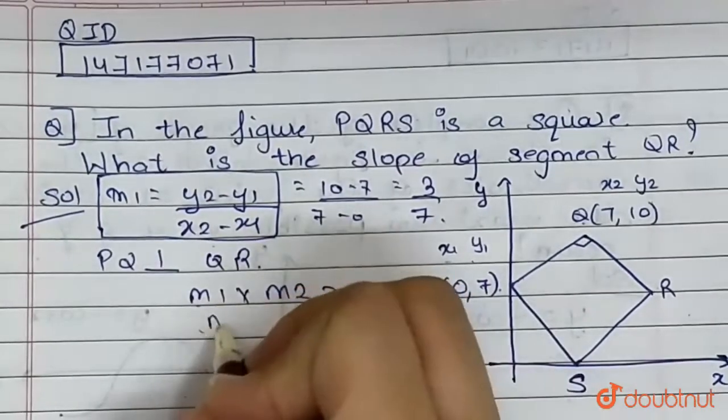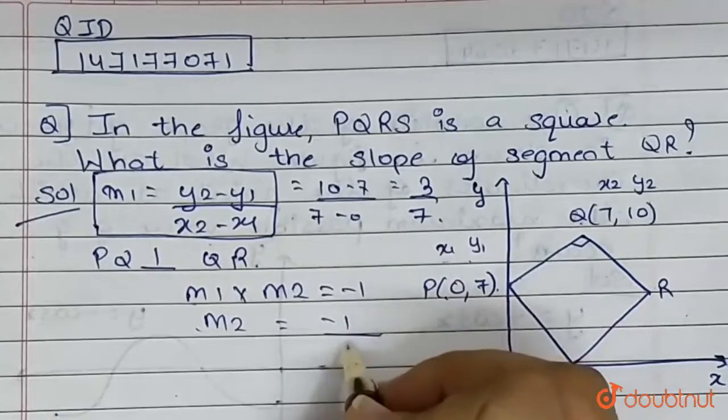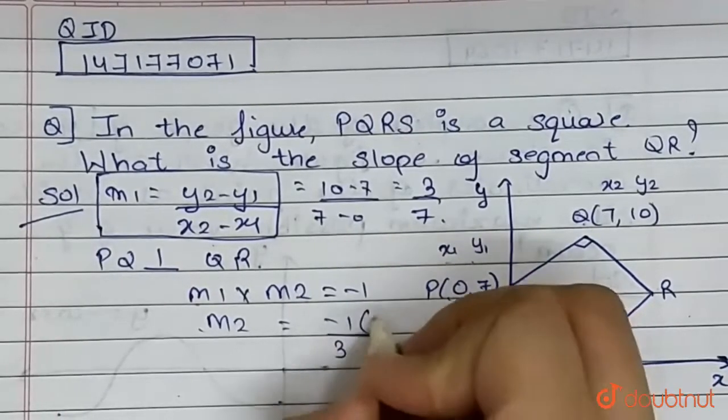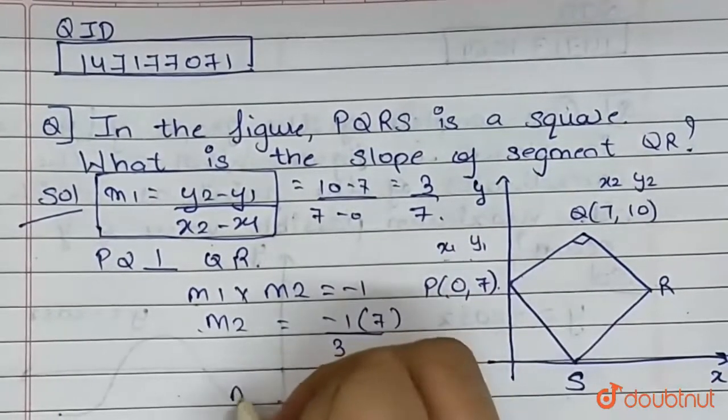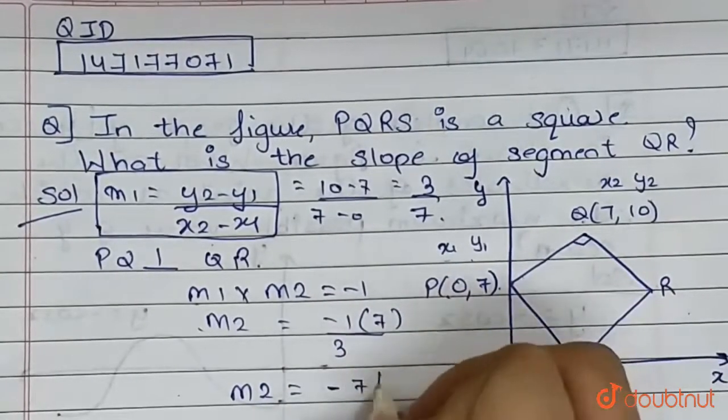So we get m2 equals minus 1 upon m1. But m1 is 3 upon 7, so the value of m2, that is the slope of QR, is minus 7 upon 3.